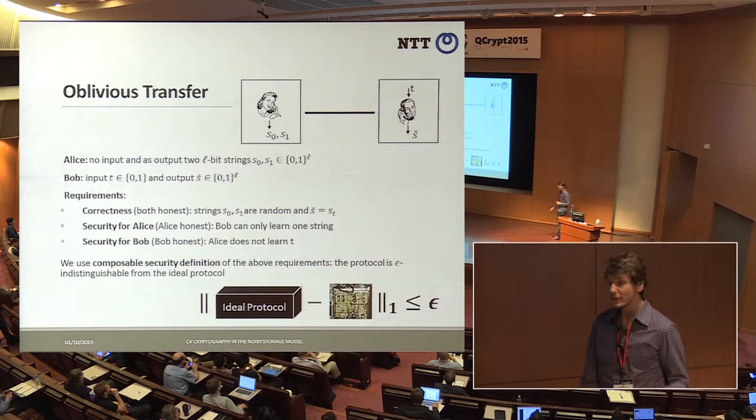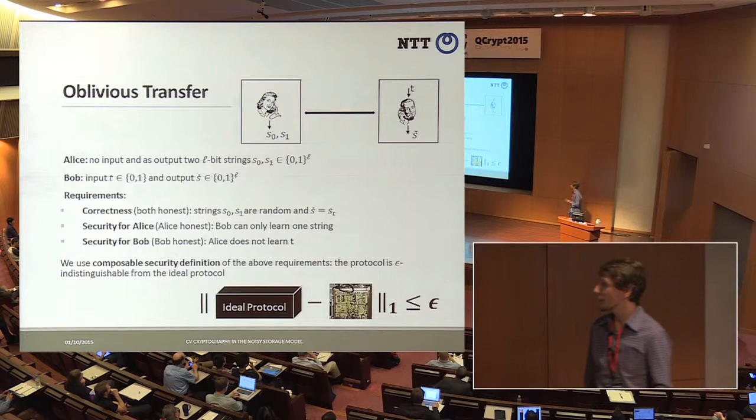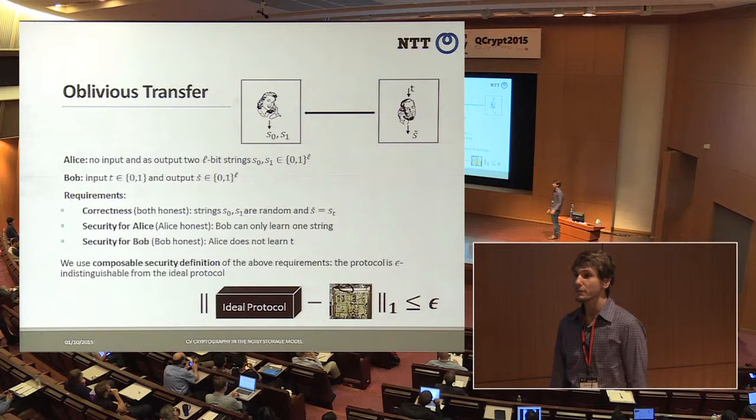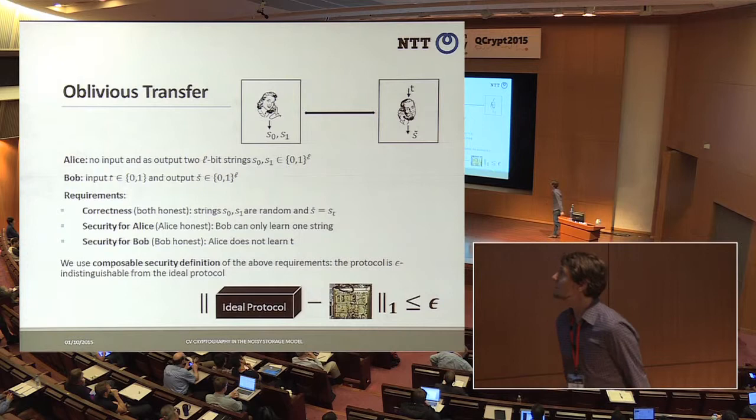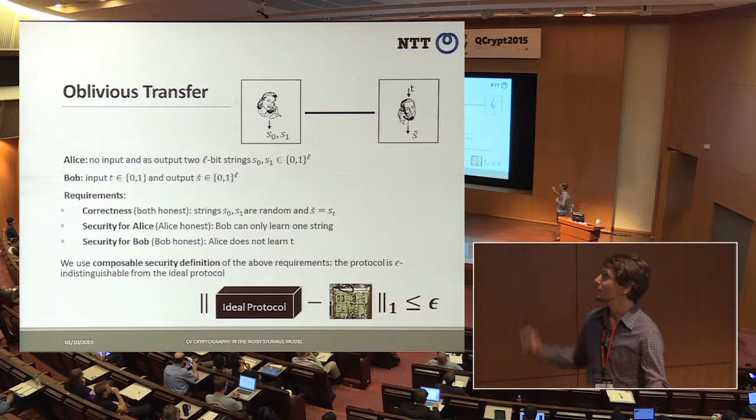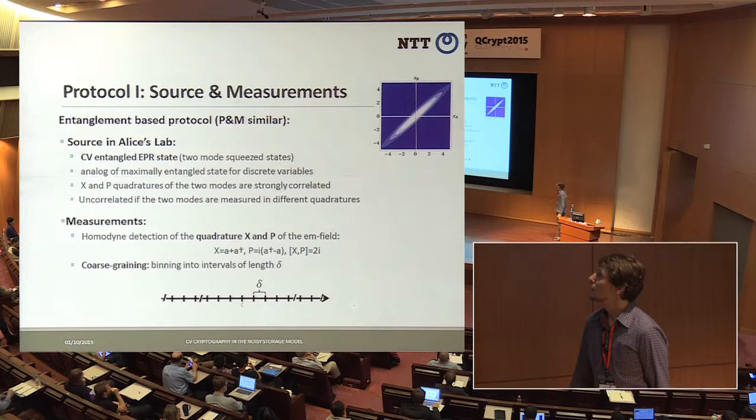Security for Alice means that if Alice follows the protocol honestly, Bob can only learn one of the strings. Security for Bob means that Alice does not learn which message he learned. We do this in a composable fashion, though I won't go into detail here, because these are very tricky especially for two-party protocols where the interacting parties can be malicious.